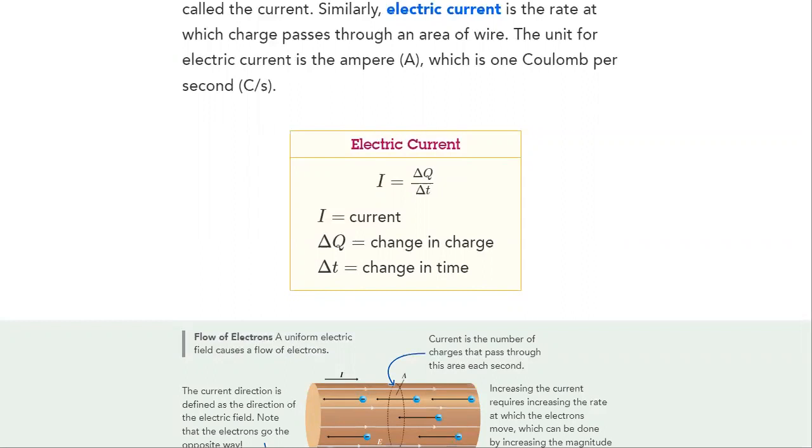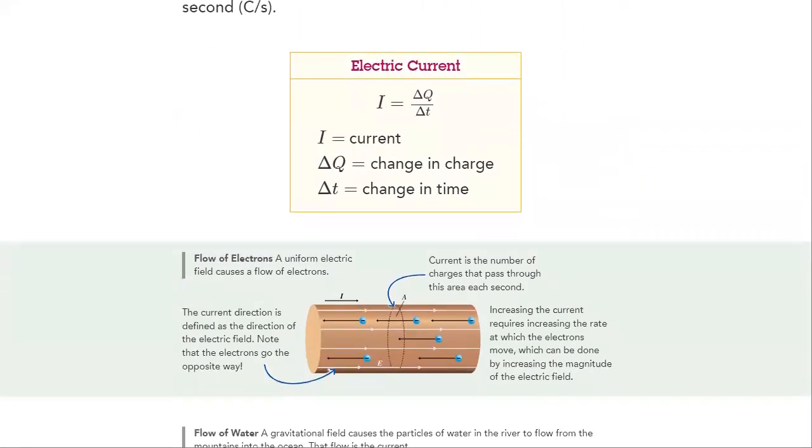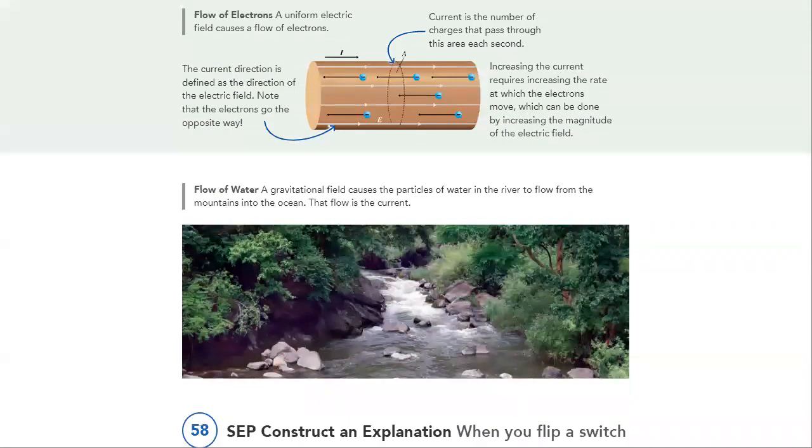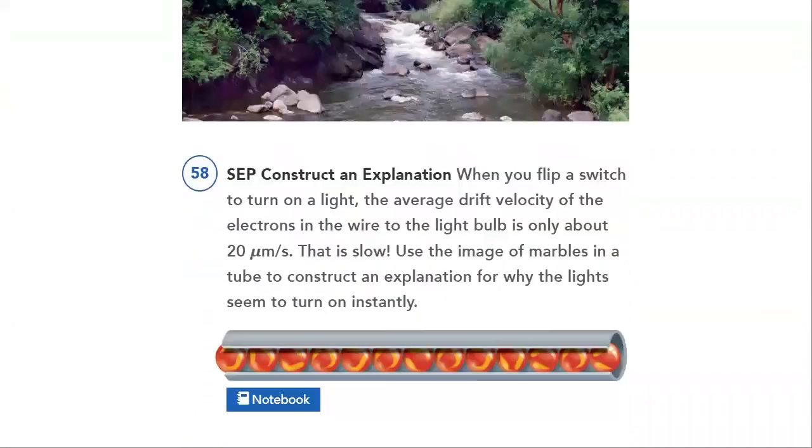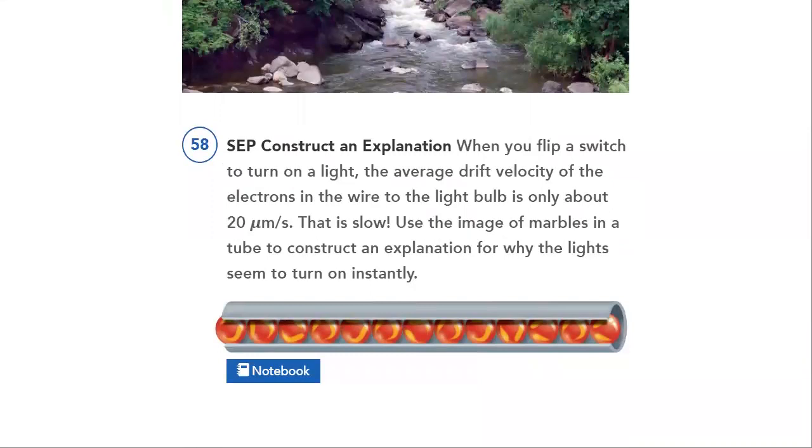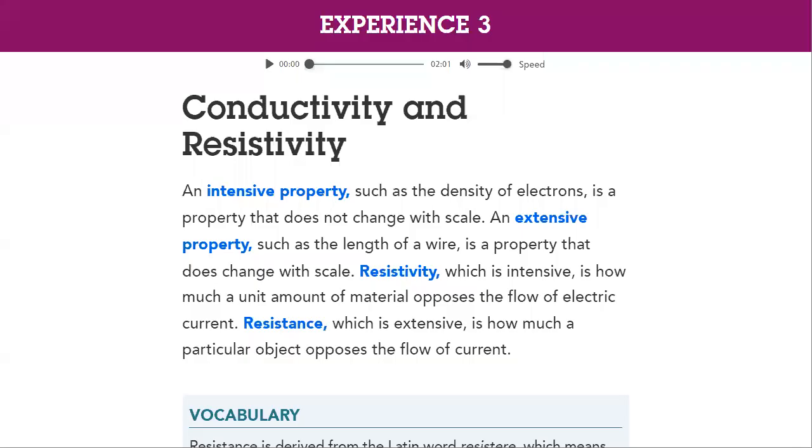It's equal to delta Q over delta T, which is change in charge over change in time. We resemble the electric current with the flow of water or water hose. Then we will discuss conductivity and resistivity.